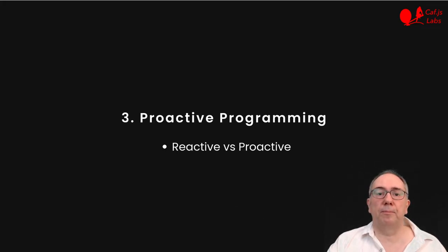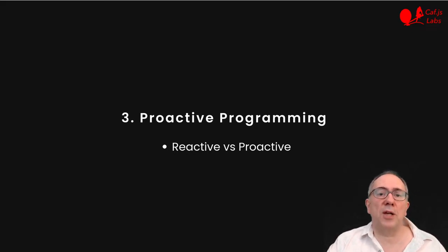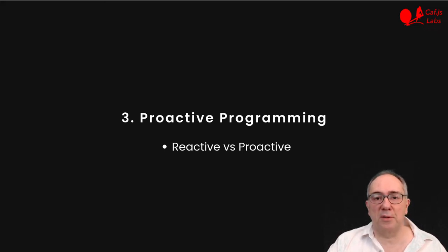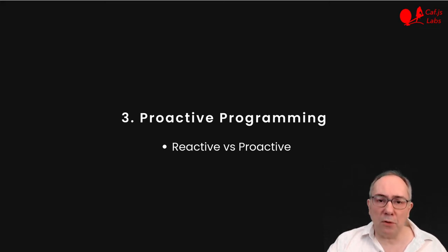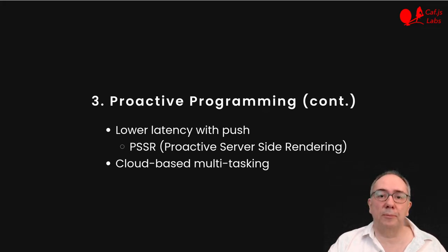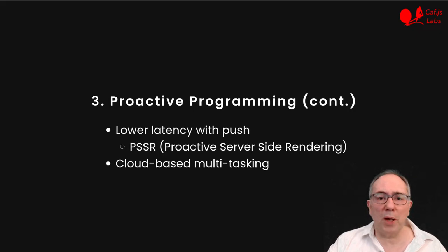3. Proactive programming. With reactive programming, actions are triggered by processing a stream of events. A complement to reactive programming is proactive programming, where we can trigger actions with no events — for example, by polling external services periodically, or computing background tasks. This can lower the perceived latency with a push model. For example, with proactive server-side rendering, or PSSR, the server does not wait for the client request.